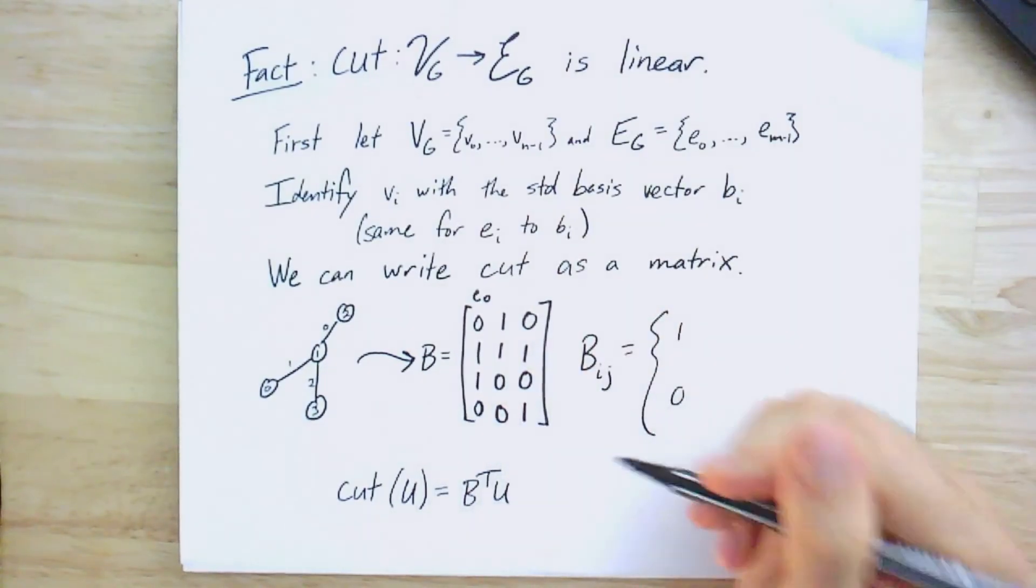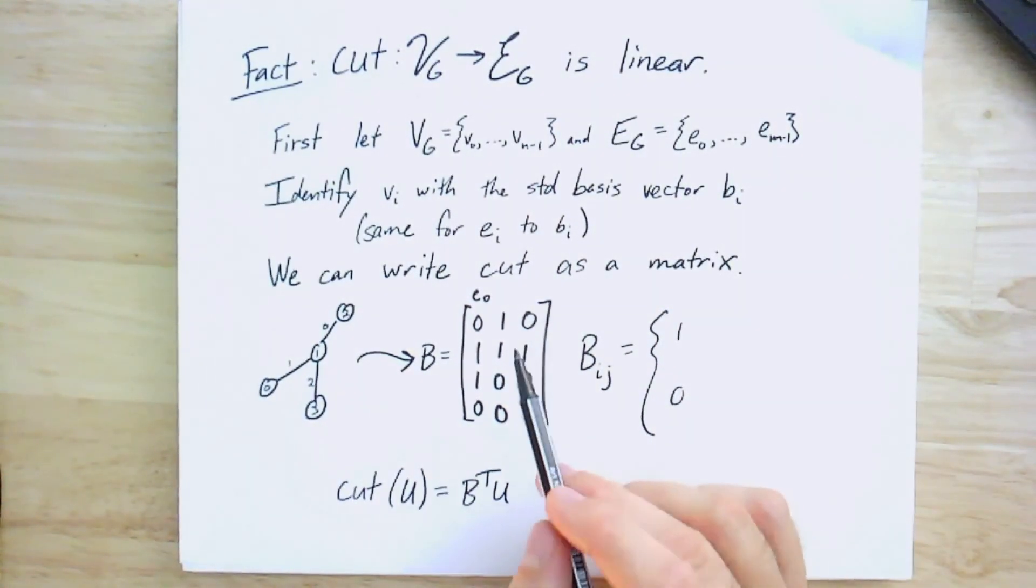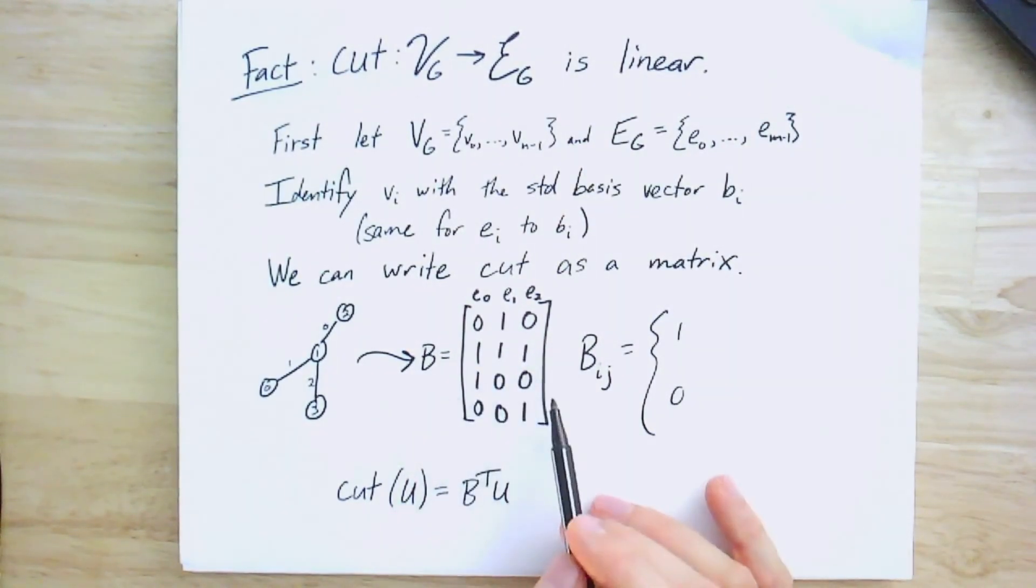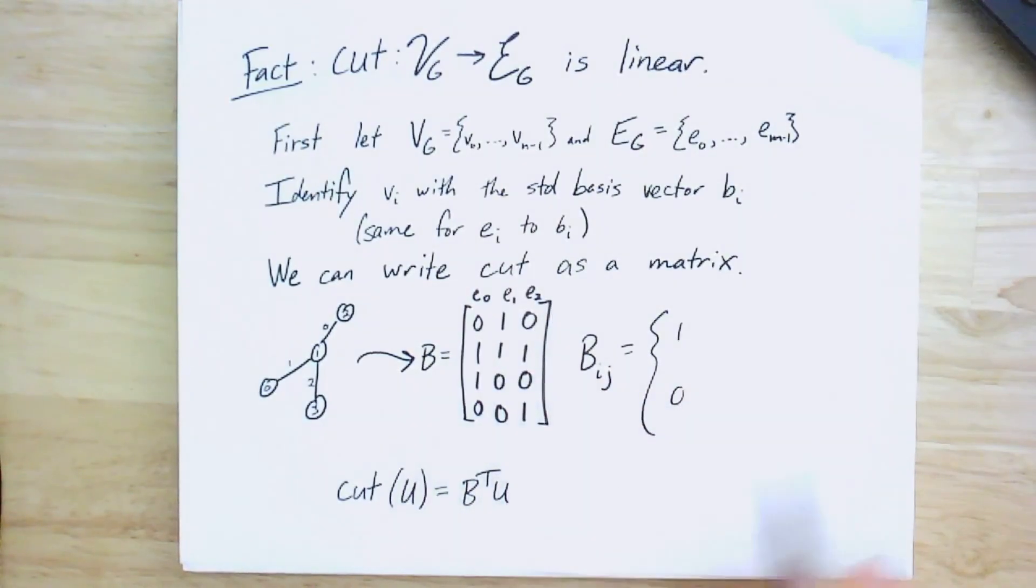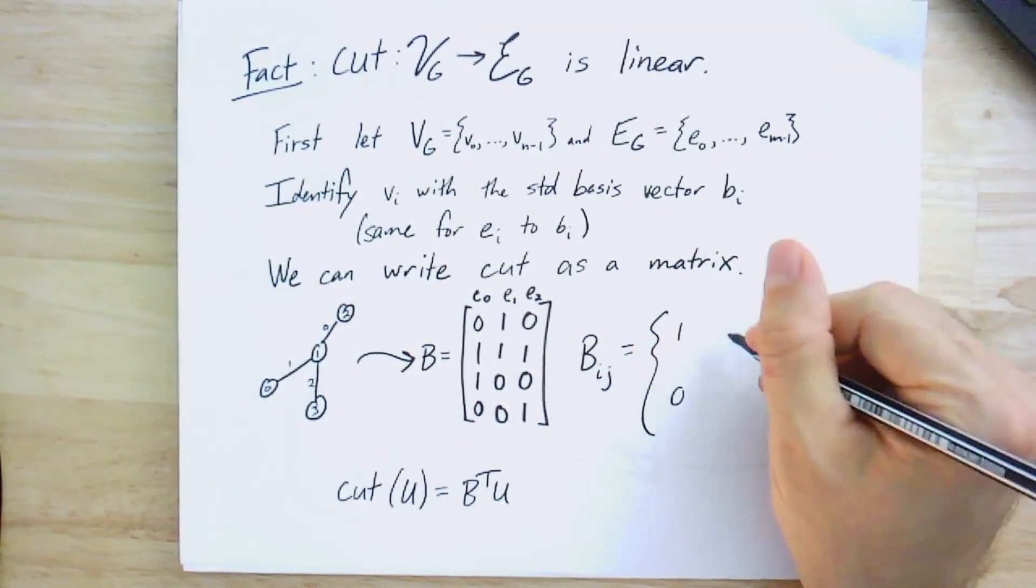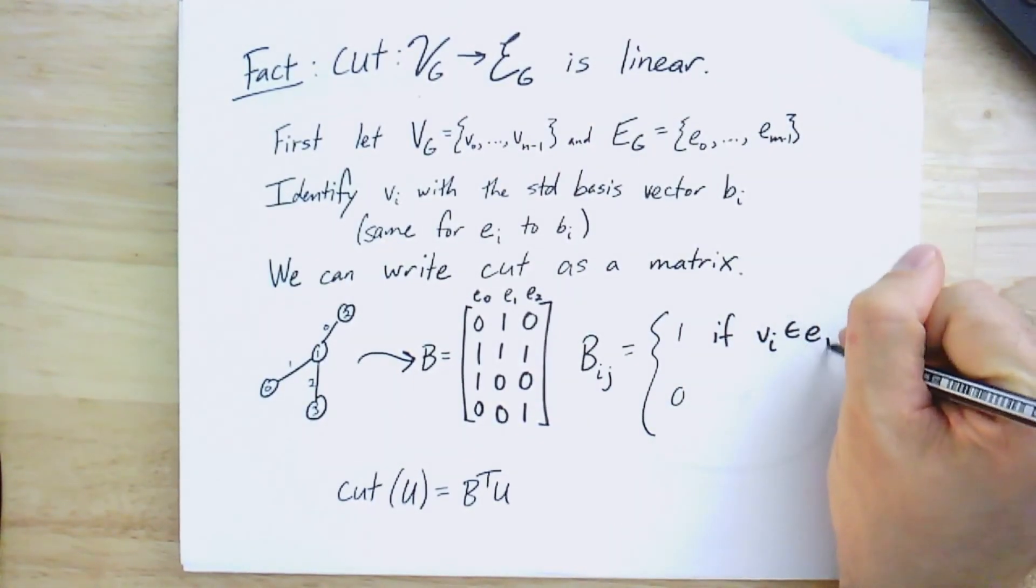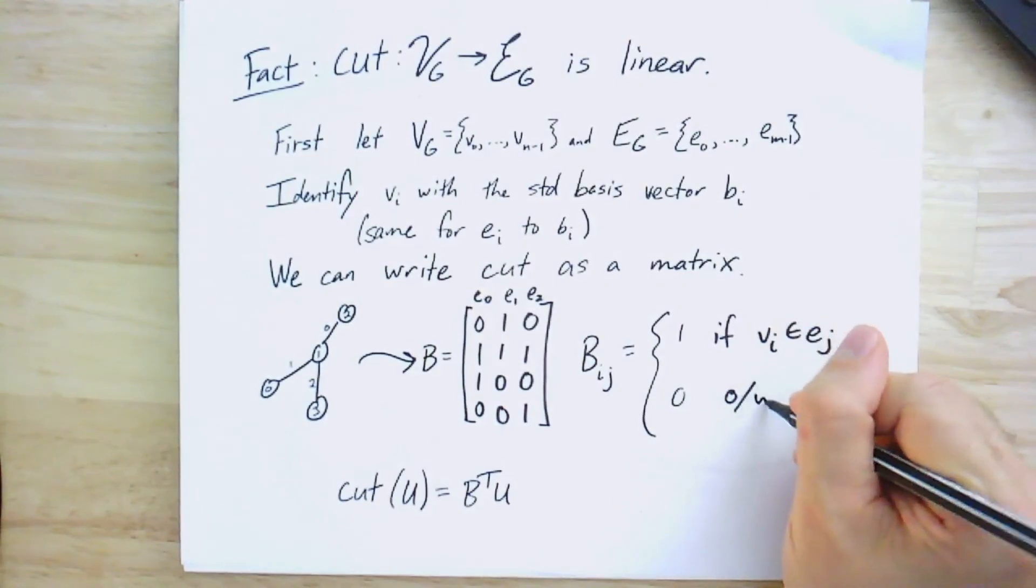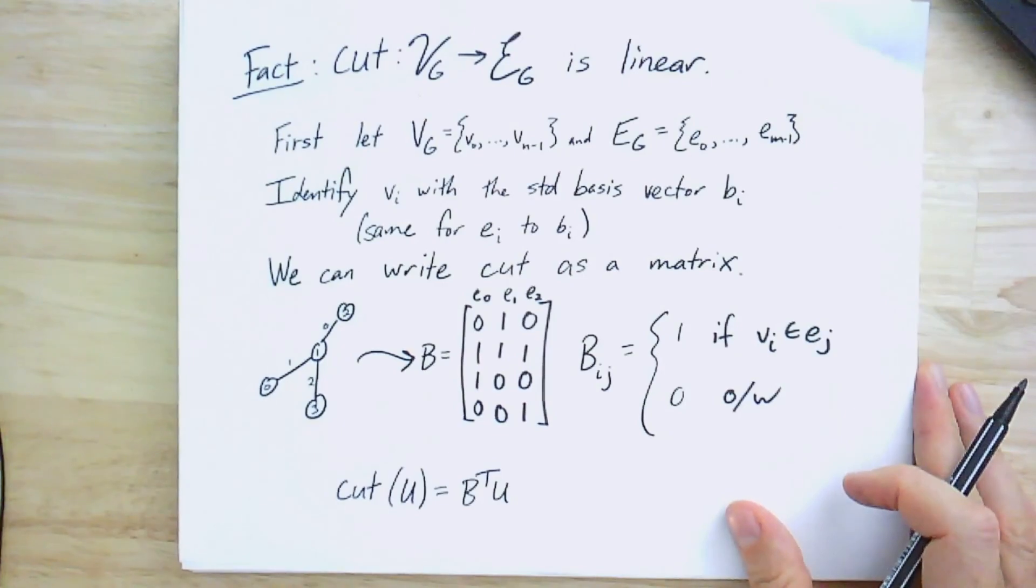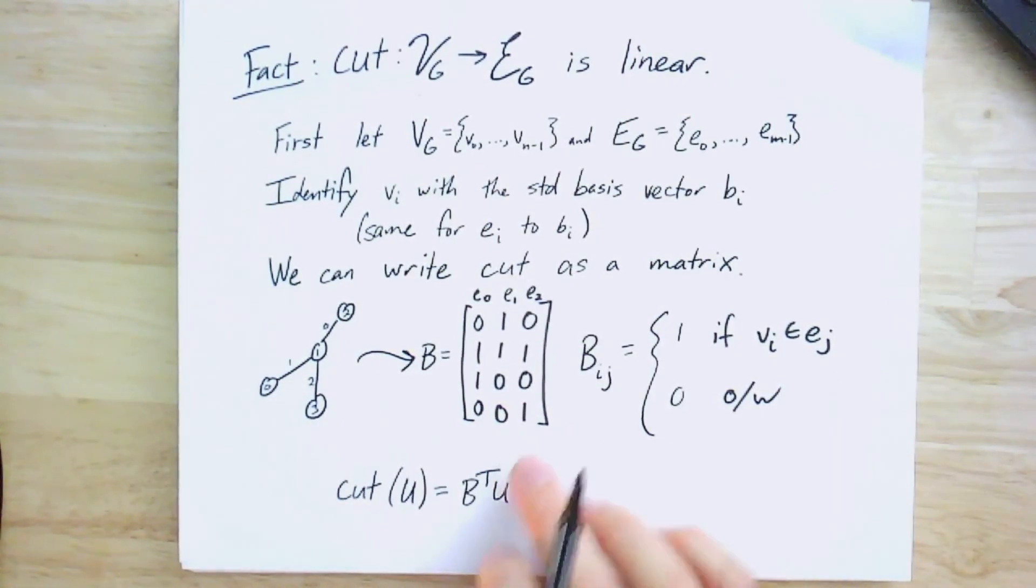So this is a matrix which really captures the incidence relationship between the vertices, which represent the rows, and the edges, which are represented by the columns. And more generally, we're going to define this matrix B to have an entry ij equal to 1 if the i-th vertex is in the j-th edge, and 0 otherwise. And now, this cut function, it turns out, is exactly just B transpose U. Now, I've done it in the transpose for some historical reasons, which hopefully will make more sense later. Because we will look at B itself as a linear transformation. But B transpose now is going to take us from sets of vertices to sets of edges.